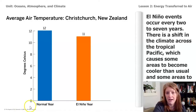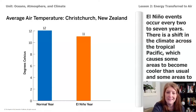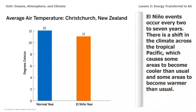On the right side of the screen, it mentions that El Niño events occur every two to seven years, and there's a shift in the climate across the tropical Pacific which causes some areas to become cooler than usual and some areas to become warmer than usual — that is sort of a definition of what El Niño is. It's hard for us when we use Fahrenheit more frequently to understand how cold 12 degrees Celsius really is. Is it like super cold, like Antarctica? Is Christchurch, New Zealand like Antarctica?